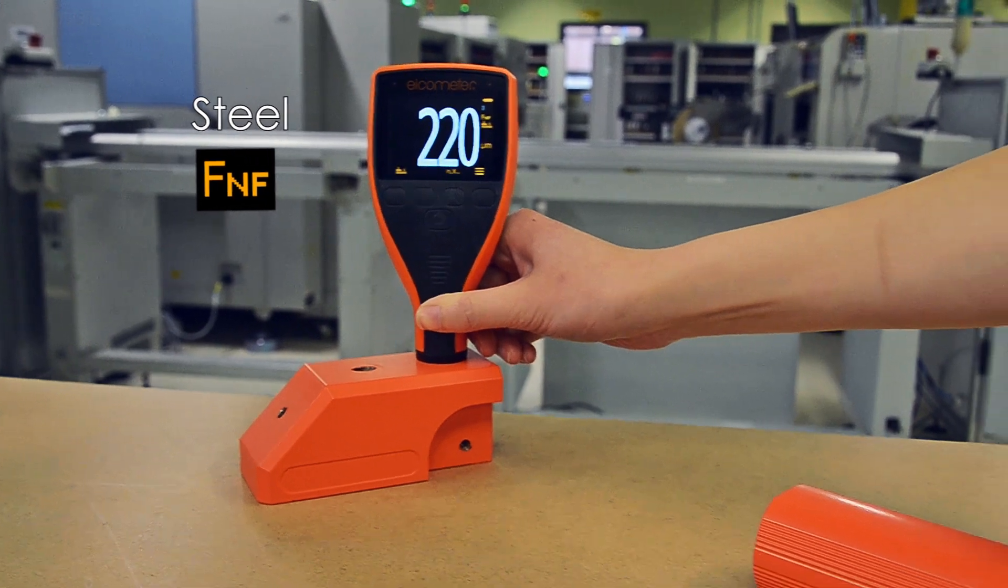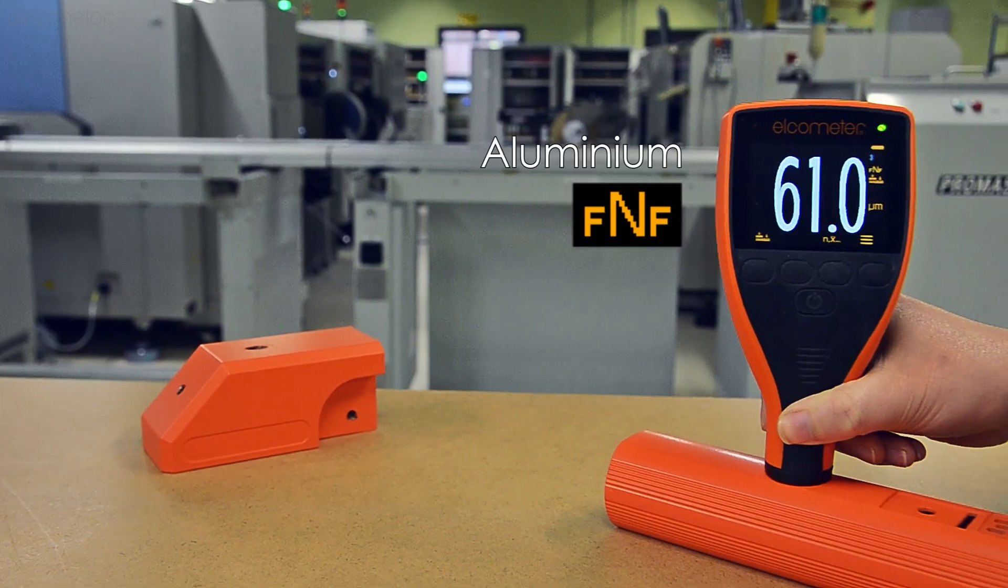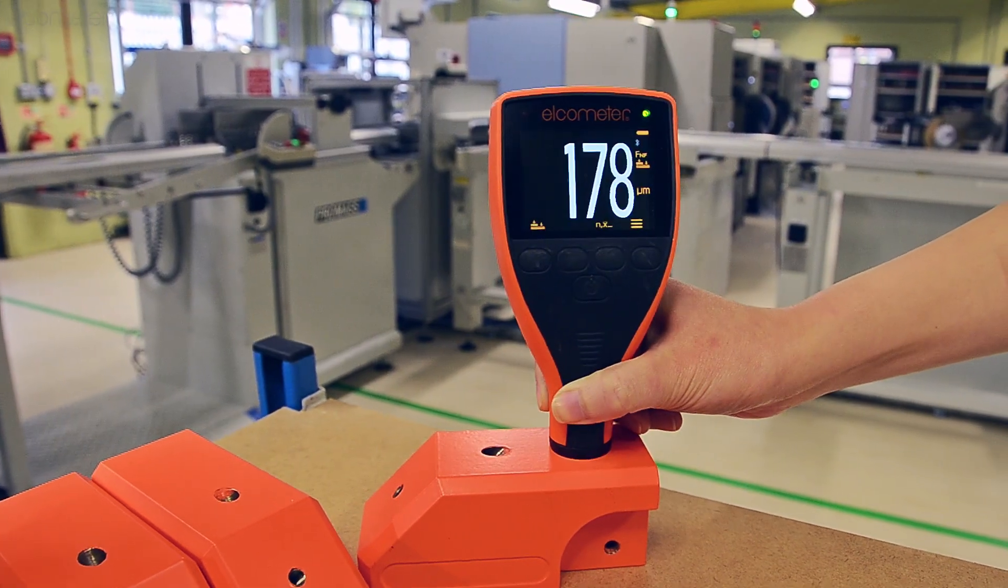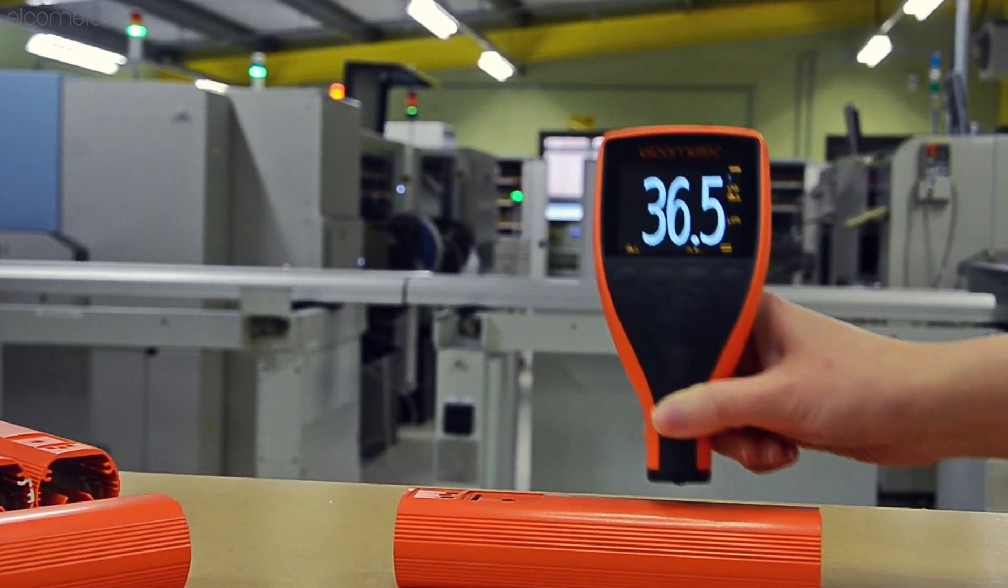Whether you're measuring on ferrous or non-ferrous metal substrates, the new Elcometer 415 automatically provides you with an accurate dry film thickness reading, whatever the substrate.